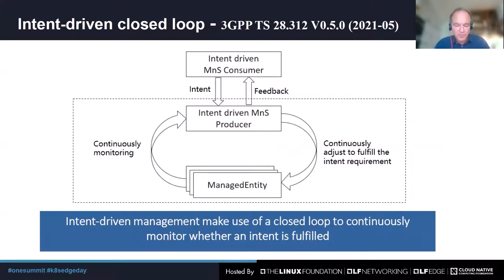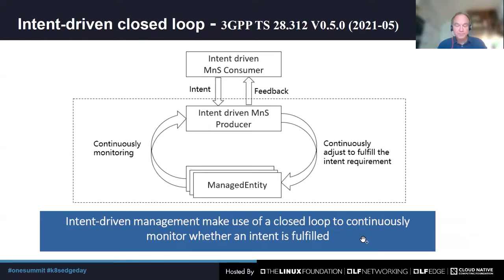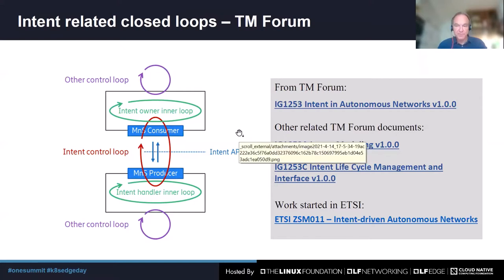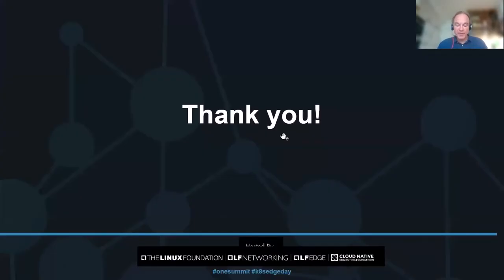Here is a picture from 3GPP on intent that contains two closed loops: one on the top between the intent owner, the management service consumer, and the intent handler, the management service producer, to handle the intent setting, negotiation, and reporting; and one underlying control loop as described before. The intent-driven management makes use of a closed loop to continuously monitor whether an intent is fulfilled. There is also a lot of intent-related closed loop work in TM Forum and also in ETSI CSM. Here is a figure from TM Forum showing the use of multiple closed loops for intent-driven management. And that concludes my presentation. Thank you very much for your attention.